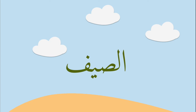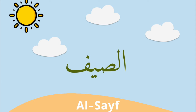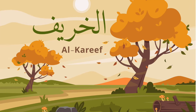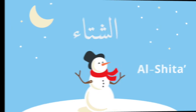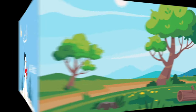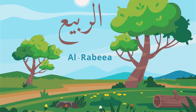The four seasons in Arabic are: summer — الصيف, autumn — الخريف, winter — الشتاء, and spring — الربيع.